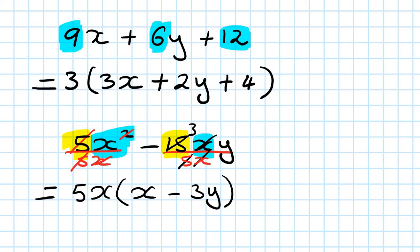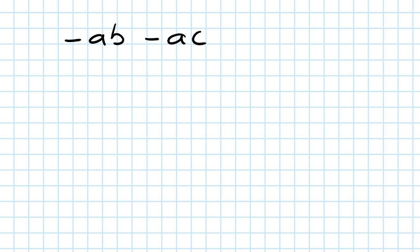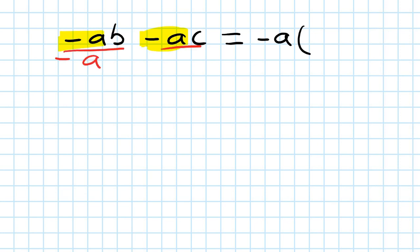Now let's move on to common factor involving negative numbers — same process, just adding a bit of flavor. Let's say negative AB minus AC. This time the common factor is negative A. So I take negative A out and divide by negative A. Negative divided by negative gives positive, so B is left. And for the second term, negative divided by negative also gives positive, so you're left with plus C. Answer: -A(B + C).